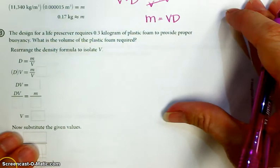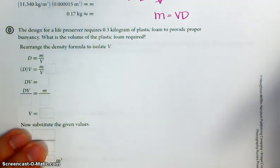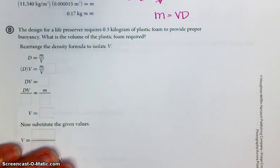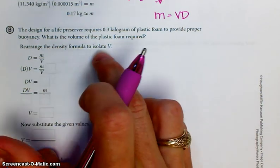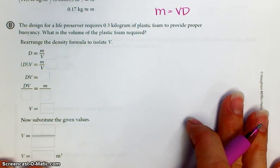All righty. The design for a life preserver requires 0.3 kilograms of plastic foam to provide proper buoyancy. What is the volume of the plastic foam required? So this time, you're going to have to take the density formula, rearrange it to solve for volume.